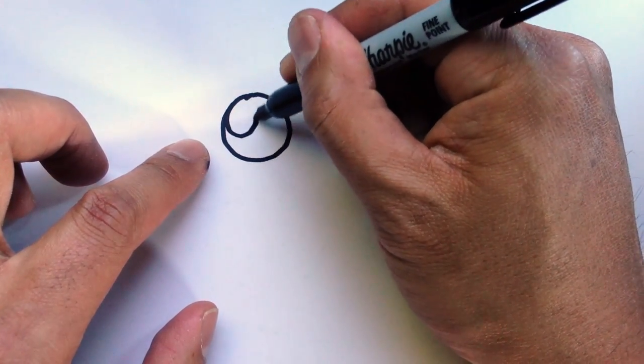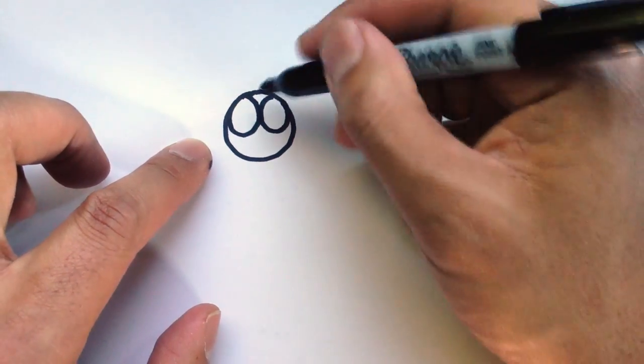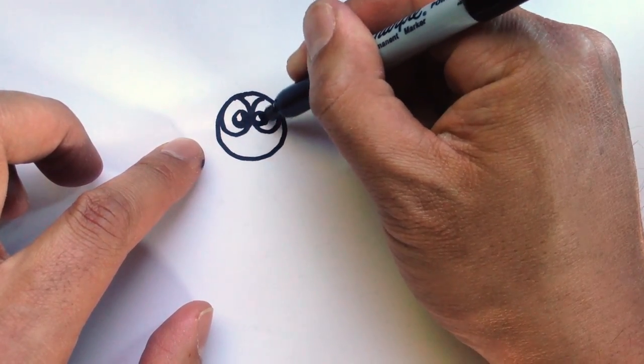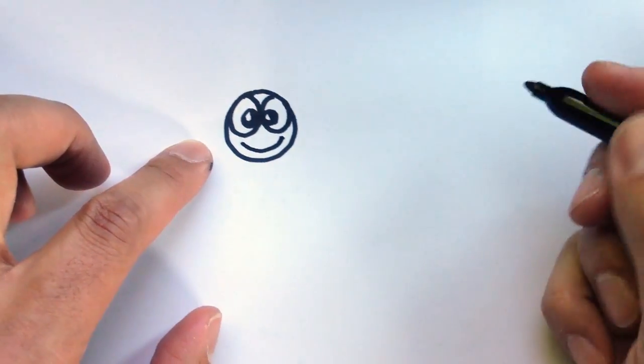Then we're going to draw in two big round eyes. Then I'll make them a little bit cross-eyed, so big pupil, just like that, and a happy smile.